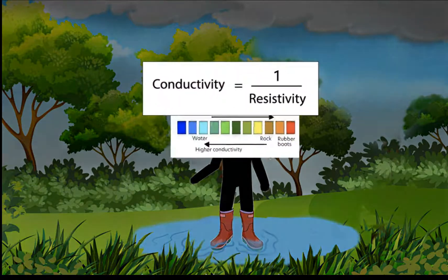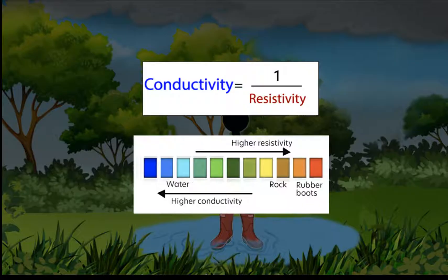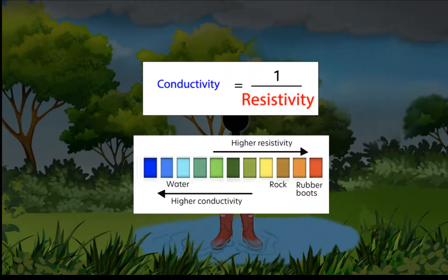In science terms, we say rubber has a high resistivity. Conductivity and resistivity are inverses of each other. If material has high conductivity, it has low resistivity. And high resistivity means low conductivity.